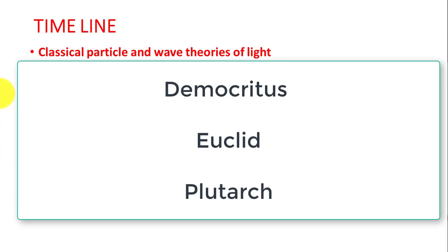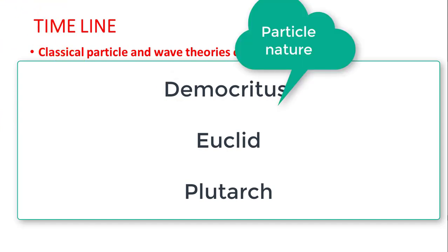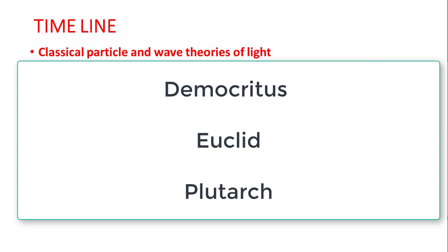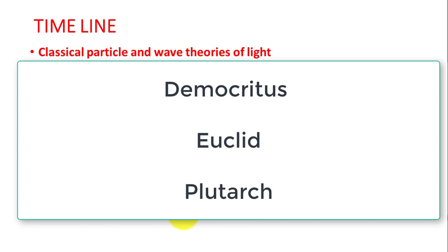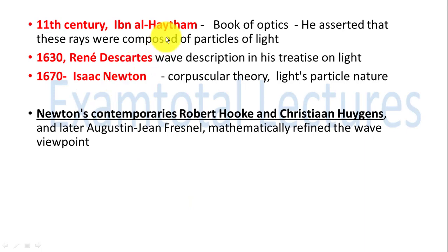In the 5th century BC, Democritus did extensive research on this topic and supported the particle nature of light. Then came Euclid in the 4th to 3rd century BC, who also talked about light propagation. In the 1st to 2nd century, multiple reflections were discussed. In the 11th century, Ibn al-Haytham wrote a very important book on optics in which he discussed the particle nature of light — according to him, rays were composed of particles of light. In 1630, the famous French philosopher and mathematician René Descartes also gave a wave description of light in his treatise.